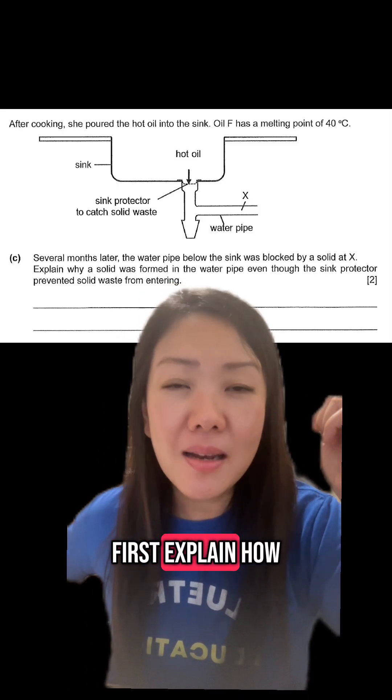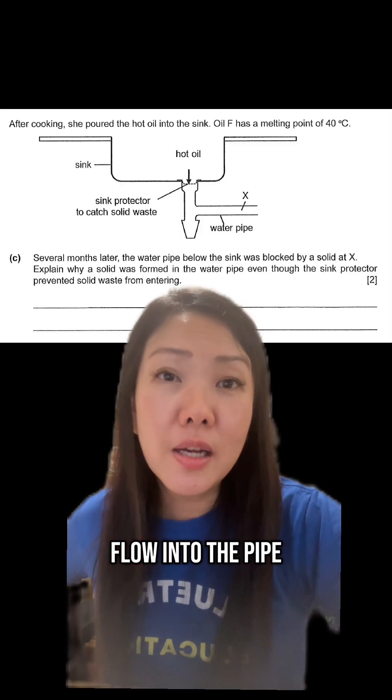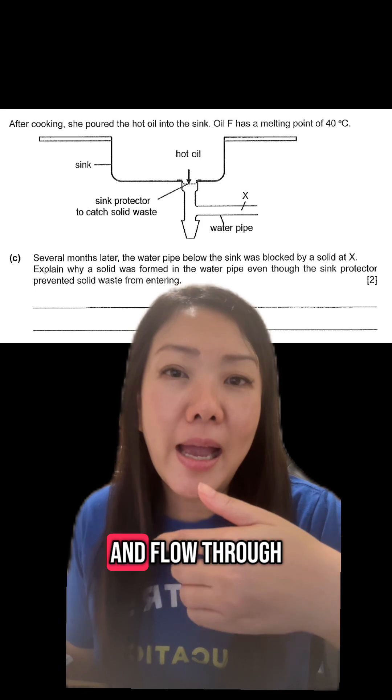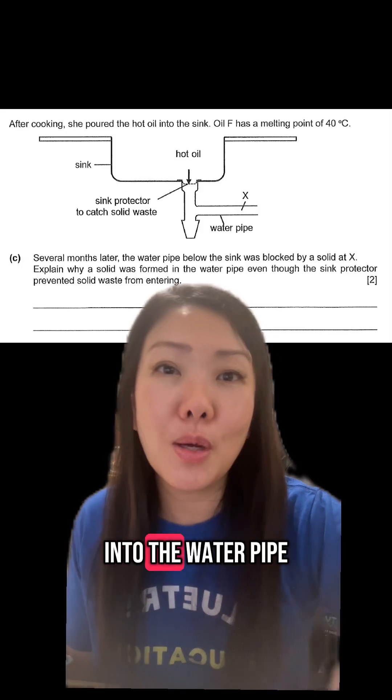I'm going to first explain how the solid waste was able to flow into the pipe. So we are going to say that the hot oil was poured into the sink and flowed through the sink protector into the water pipe.